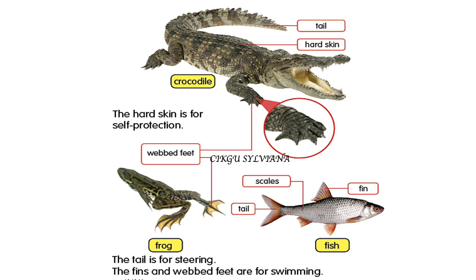As you can see, crocodile has hard skin. The hard skin is for self-protection. Let's take a look at the fish. The fish has a tail, and the tail is for steering. It also has fins. Fins help the fish to swim. That's the importance of having some of the parts of the body.